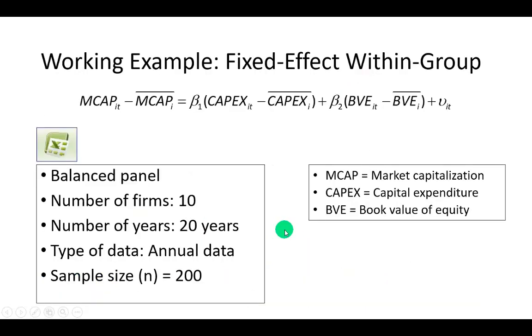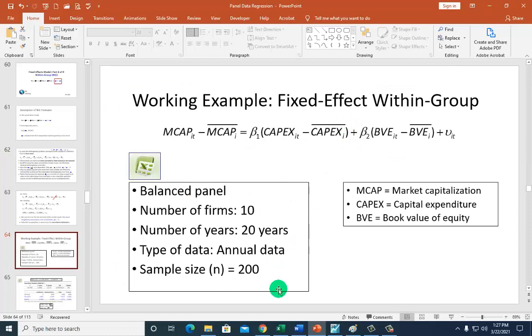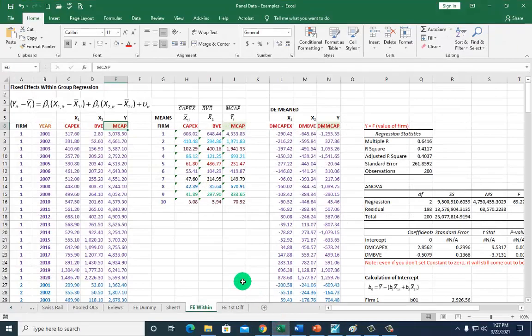Using our empirical example where we regress market capitalization on capital expenditure and book value of equity, our dataset consists of 10 firms with 20 years of data providing us with 200 observations. So this is our time mean model. I'm going to go real quick to Excel to show how that is. And so this is the original dataset right here.